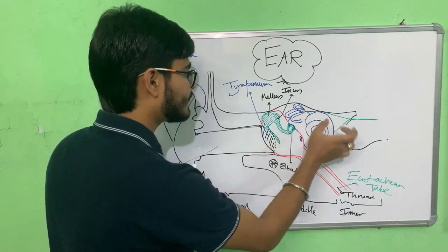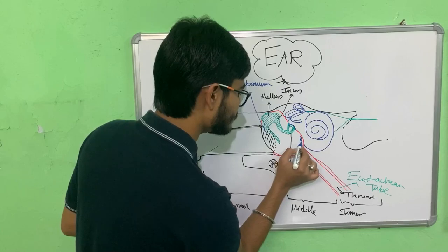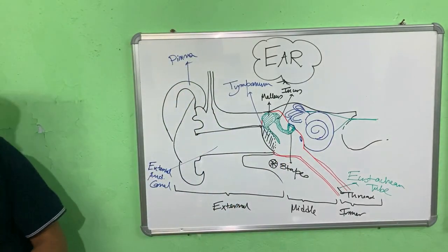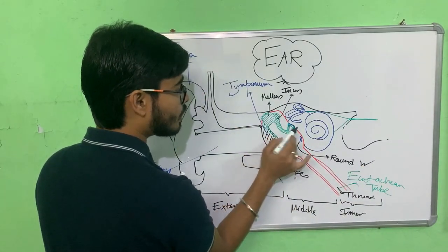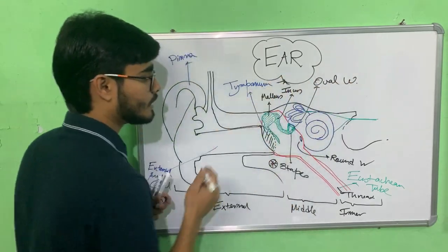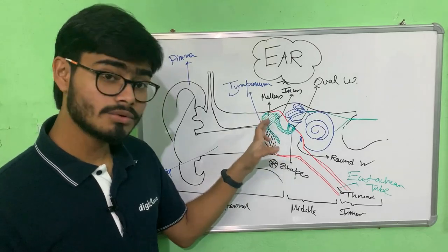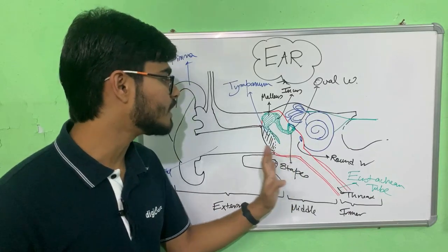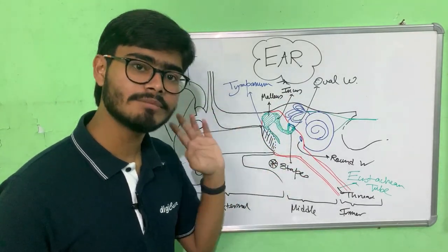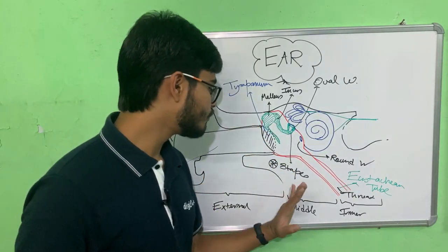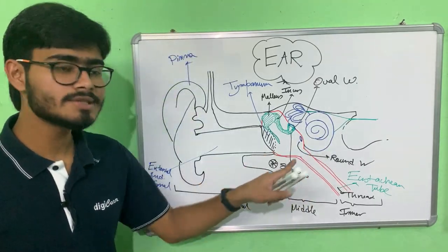The middle ear is connected to the inner ear using two connections — the round window and the oval window. The oval window transmits sound from the middle ear, specifically from the ear ossicles, to the cochlea. Both the oval and round windows are covered by membranes. We'll discuss the function of the round window later when we talk about the cochlea.